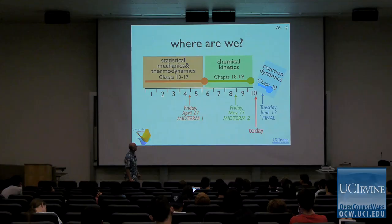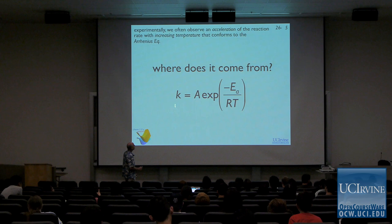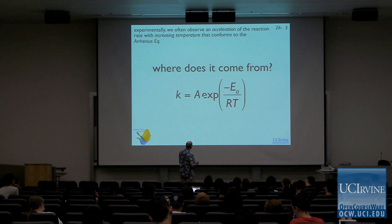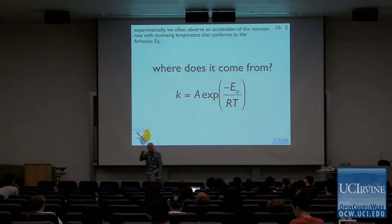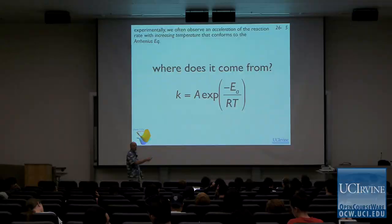Basically what we want to understand is where does the Arrhenius equation come from. When we measure the temperature dependence of reactions, most of the time we find out that the reaction rate conforms to this equation. We make a plot of log of the reaction rate versus 1/T, we get a straight line, we get the activation energy from that straight line. That guides a lot of what we do as physical chemists, but we have never explained where this equation comes from. In some ways this is the most important equation in chemical kinetics.